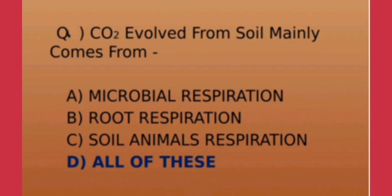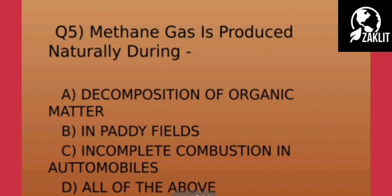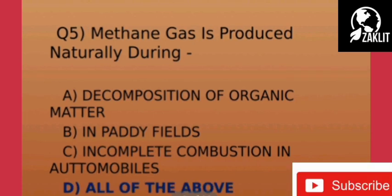The next question asks: methane gas is produced naturally during which of the following processes? The options are: decomposition of organic matter, in paddy fields, incomplete combustion in automobiles, or all of the above. The correct option is option number D — all of the above.